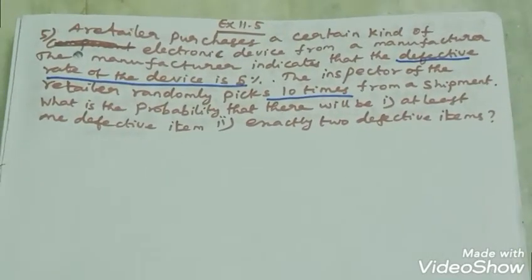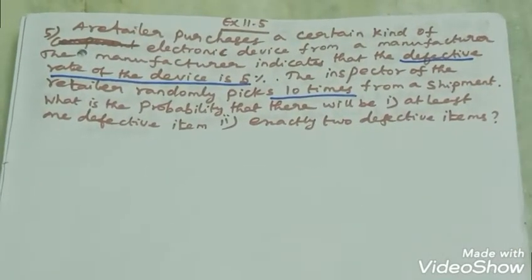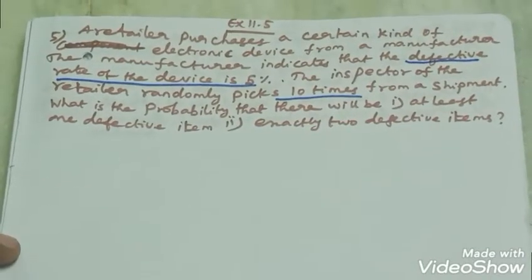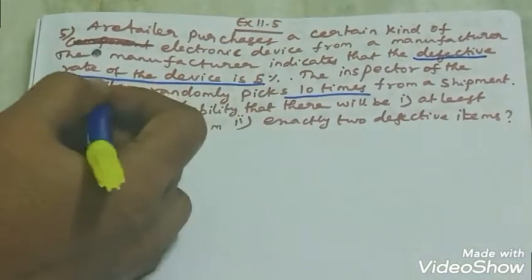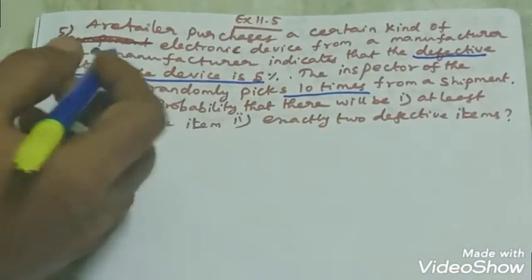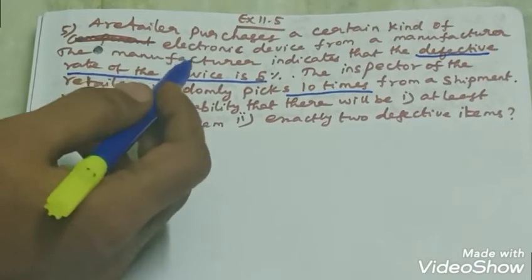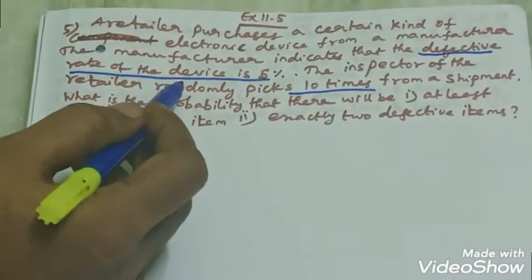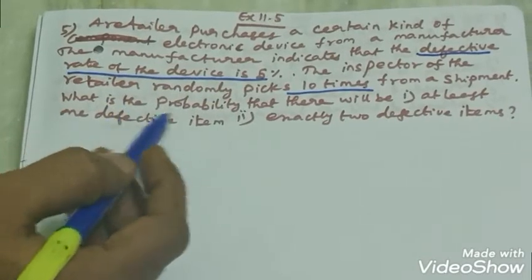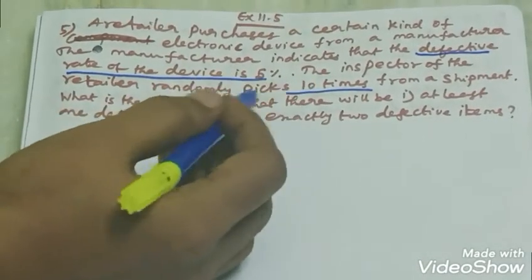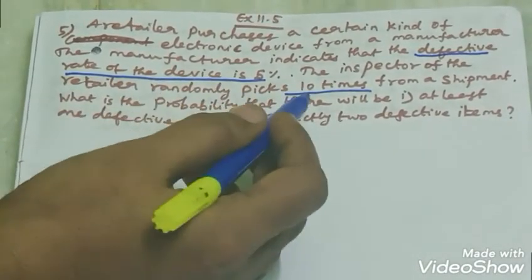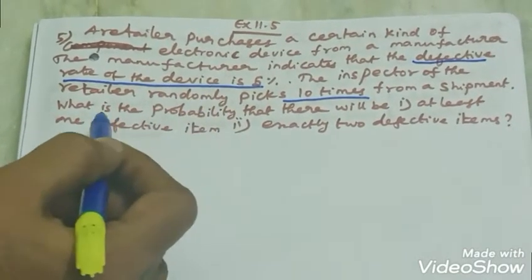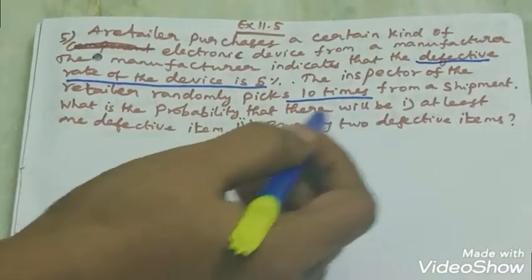Here n is equal to 10. We are limited to the binomial distribution. The manufacturer says that the defective rate of the device is 5%.